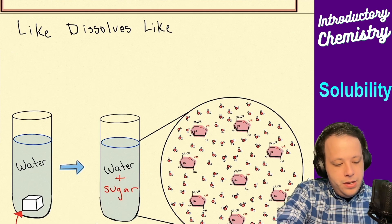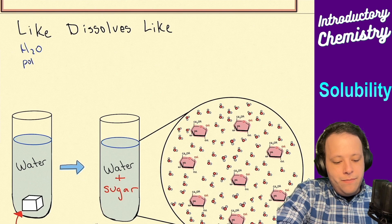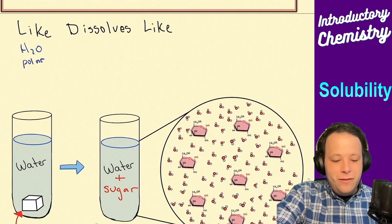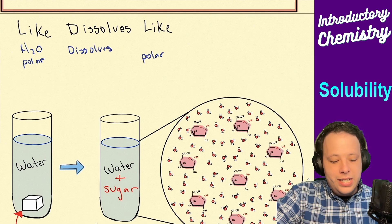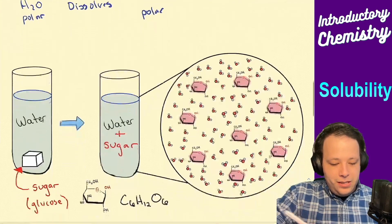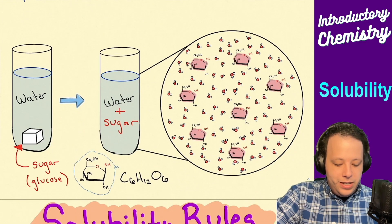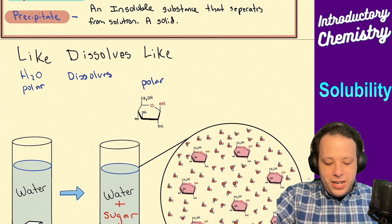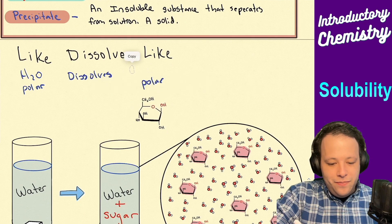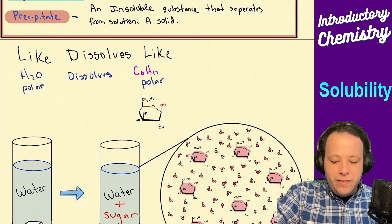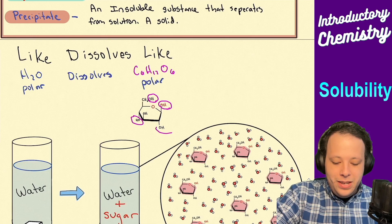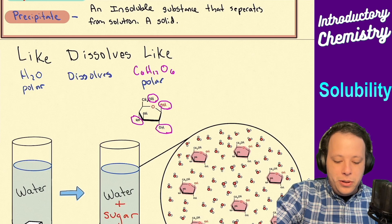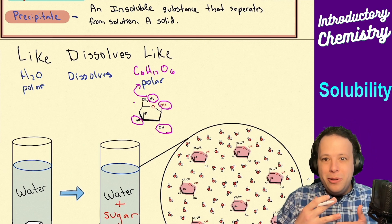Water is a polar molecule, so it's going to dissolve other polar molecules — like dissolves like. In the case of glucose, C6H12O6, notice how it has a bunch of OH groups all around it. These are all polar groups, and being that they are polar, they're going to dissolve.